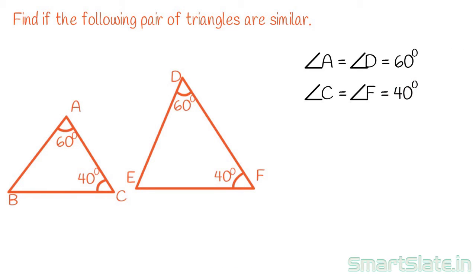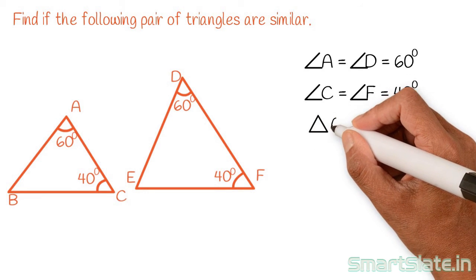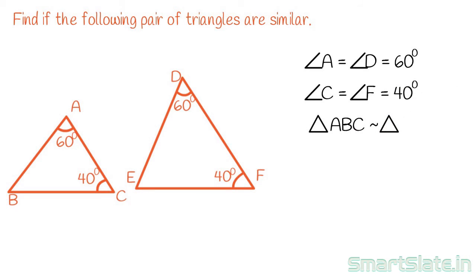According to the AA criteria, which states that if two angles of one triangle are equal to the corresponding two angles of another triangle, then the two triangles are similar. Hence, triangle ABC is similar to triangle DEF.